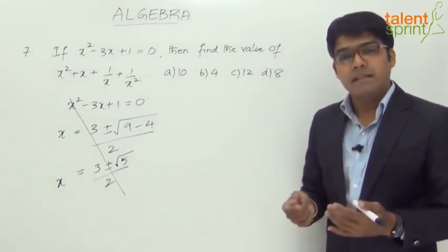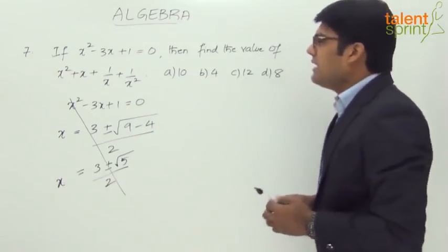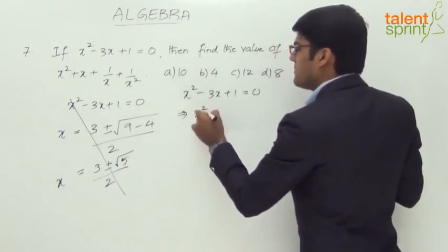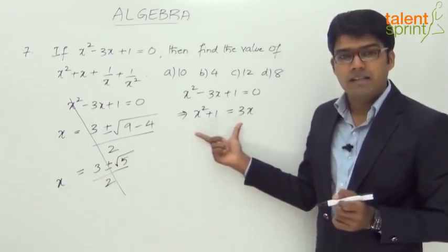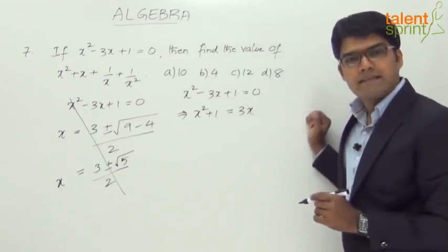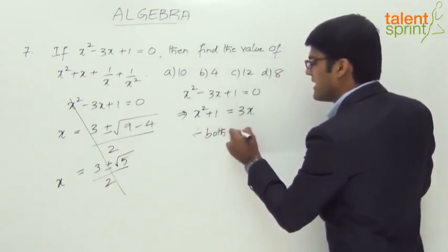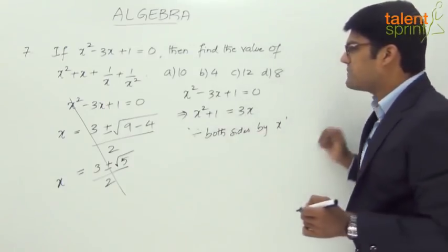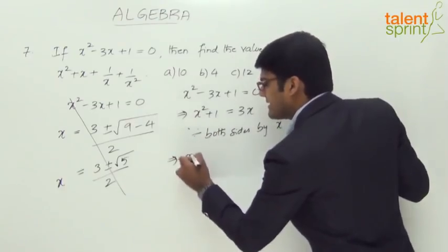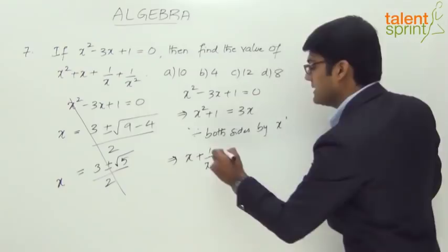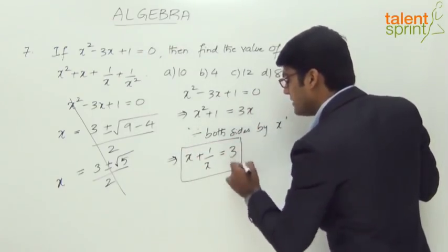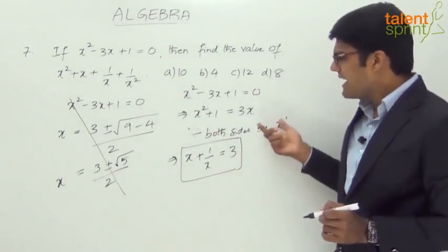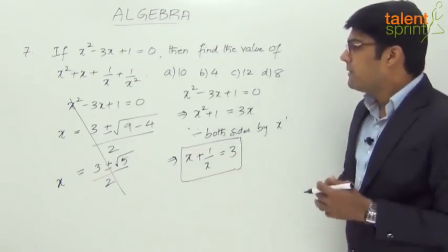We will have to use some other method to find the required answer. Look at the expression x squared minus 3x plus 1 equal to 0. From this, we can say x squared plus 1 equals 3x. Now divide both sides by x. We get x plus 1 by x equals 3. This is an important result. The original equation was x squared minus 3x plus 1 equal to 0, and by simplifying it, we get x plus 1 by x equal to 3. This will be helpful in finding the answer.